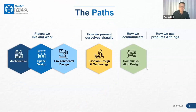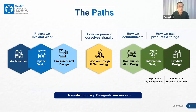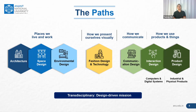What are the parts of design at Anant? There are places we live and work — disciplines like architecture, space design, environmental design. How we present ourselves — fashion design and technology. How we communicate — communication design. And how we use products: that's interaction design and product design. Interaction design is the discipline that deals with how people interact with systems — ranging from machines, cars, airplanes, to laptops.